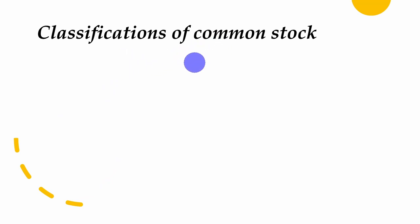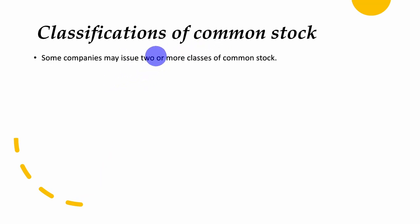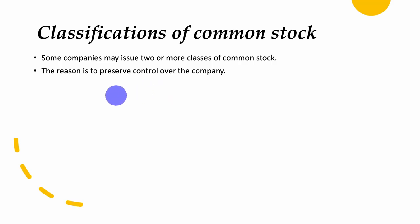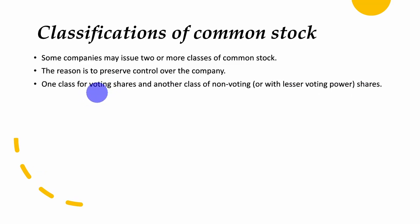Some companies may issue two or more classes of common shares to preserve control over the company, especially for founders. For instance, when companies like Google or Facebook went public, they issued multiple classes of shares — one class for voting shares and another class for non-voting shares or shares with lesser voting power. Founders may hold a class of shares with ten votes per share, while another class may have one vote or no vote at all.